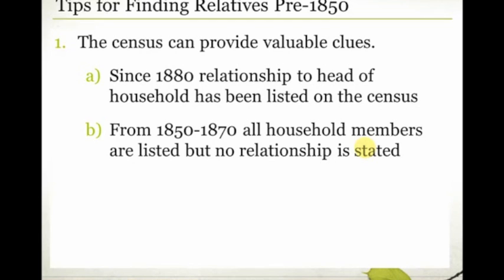From 1850 to 1870 — those three census years, 1850, 1860, and 1870 — all household members are listed, but no relationship is stated. A lot of times people fall into the trap of assuming children listed in the household must be children of the adults there. That's not always the case. I've found grandchildren, nieces and nephews, cousins, and even children who weren't related at all — servants, or in one case, children of a neighbor left behind while the neighbor went to look for land.